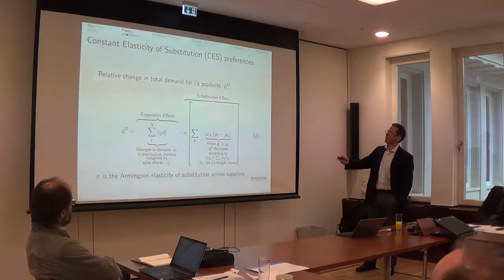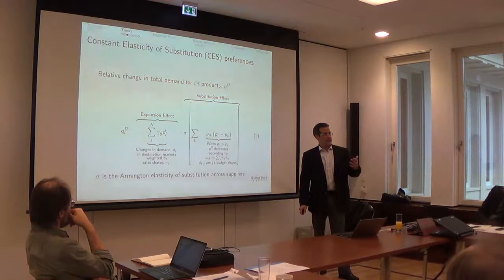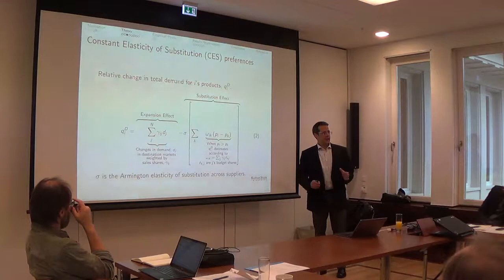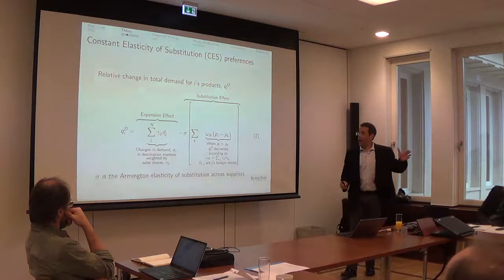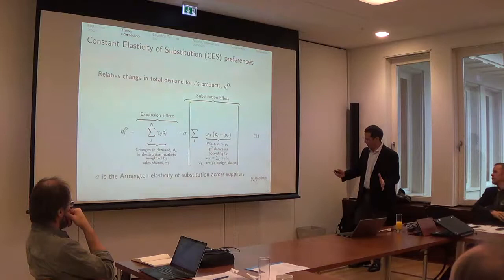So this is a constant elasticity of substitution or CES preferences. If you have heard of the gravity model of international trade, this is what underlies this model. And this is basically the system of preferences that we use in every single modern treatment of international trade theory, from Paul Krugman and before from Armington up to today. And what we have here, so the point is it's pretty standard stuff.